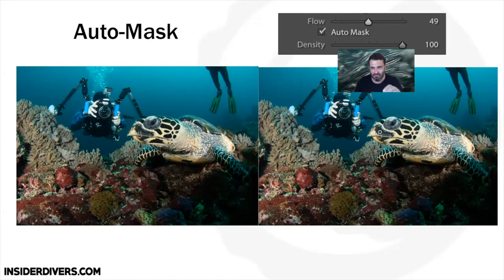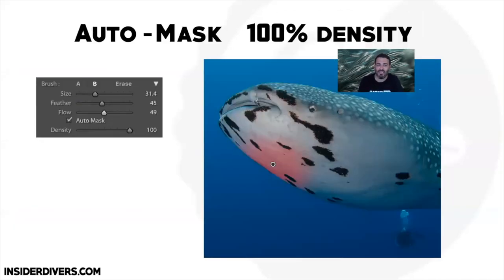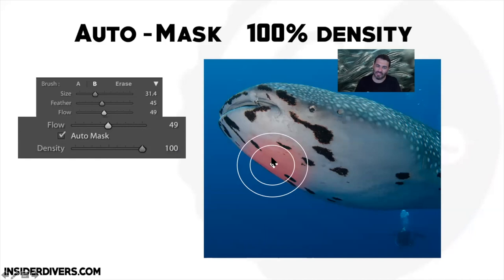Now for Auto Mask — I don't know why but it's hiding in a tiny little tick mark. Auto Mask essentially means it allows you to select objects that it can recognize, so you can very quickly mask something that would otherwise be a pain to paint. Here I just did one click and you can see it's selecting only the white area of the whale shark. That is done by using density — and you generally want density at 100. The plus button in the middle of your brush needs to be inside the form you want to paint into.